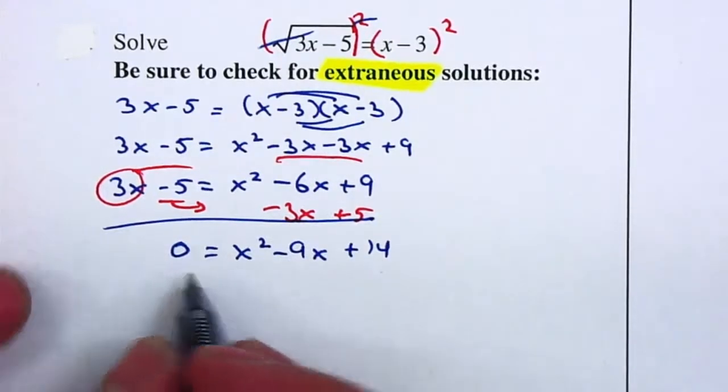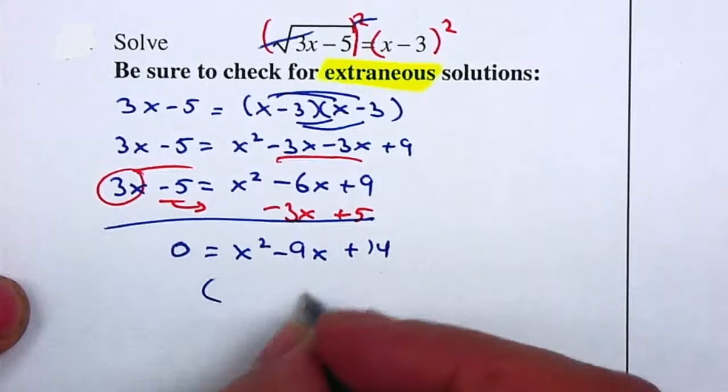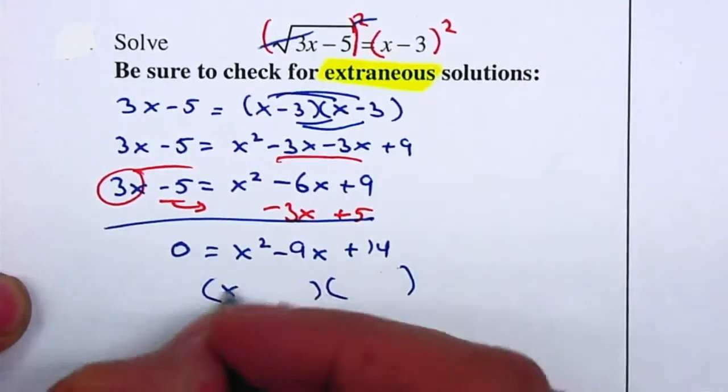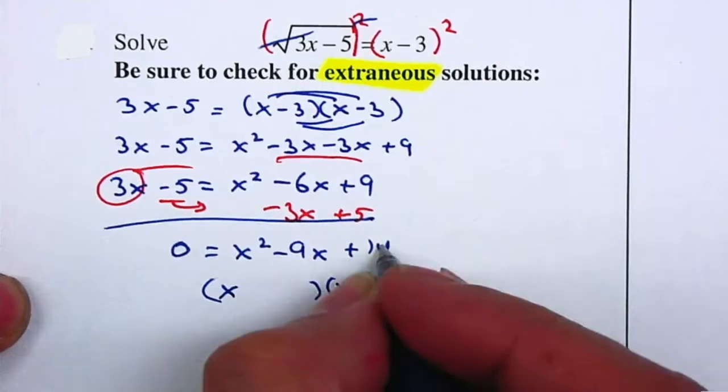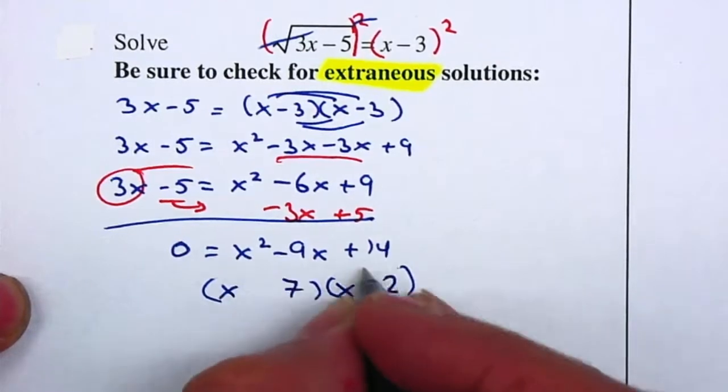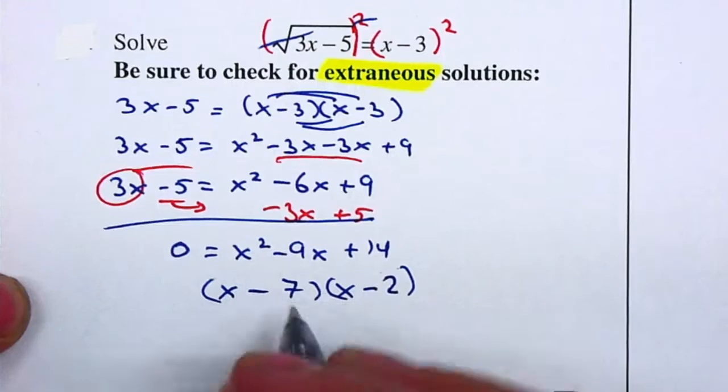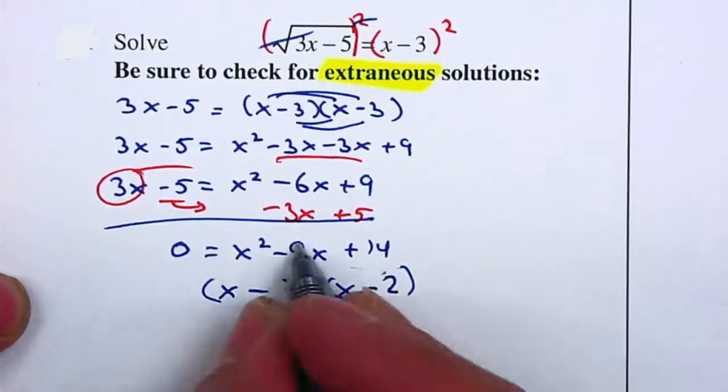And now that it's equal to 0, I must see if I can factor it so I can solve it. If I can't factor it, then I have to use the quadratic formula. In this case, I believe it factors nicely. Factors of 14 will be 7 and 2. This is a positive, so they should have the same sign. In this case, both should be negative. And if I multiply it out, I do get the negative 9x.